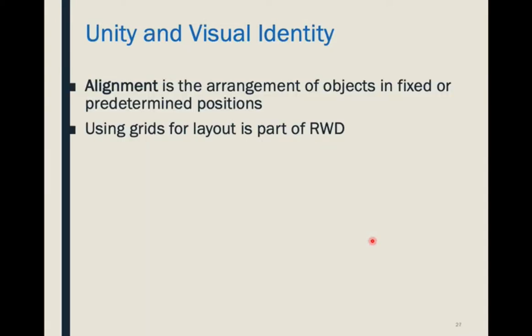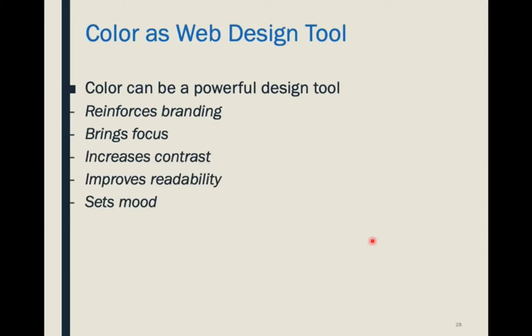Alignment is a great way to create unity as well. When we're talking about RWD — responsive web design — principles, we're talking about a 12-column grid system, where boxes and groups of text are all placed on that 12-column system to create proximity and grouping. Color is probably one of the most powerful web design tools. We have to be very, very careful and thoughtful about how we choose our color, as color reinforces the brand and can bring focus.